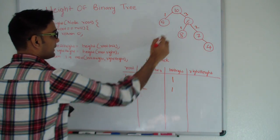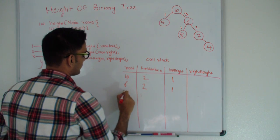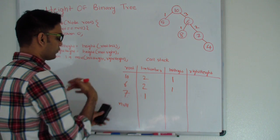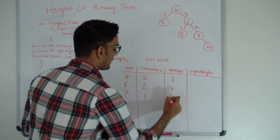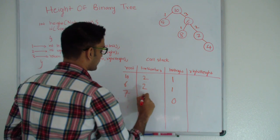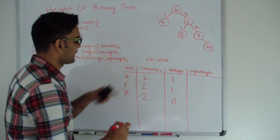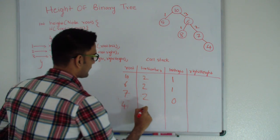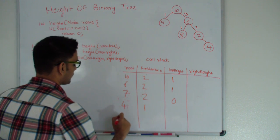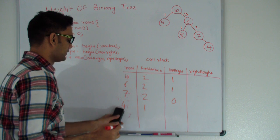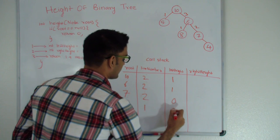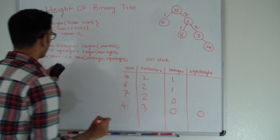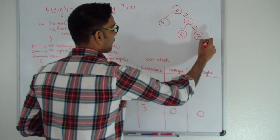We call height with 6's right, which is 7. 7 is not null, so we go into recursion from line number 1. 7's left is null, so we come back with left height 0 for 7. We execute line number 2 for 7, and 7's right is 4. 4 is not null, so it goes into recursion. Both of 4's children are null, so left height is 0 and right height is 0. At line number 3, 4 returns 1 plus max of 0 and 0, so 4 returns 1 to 7.